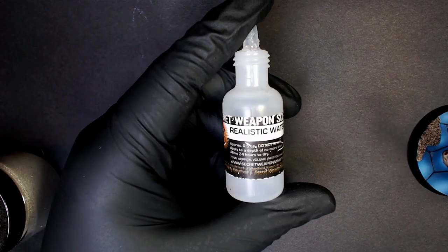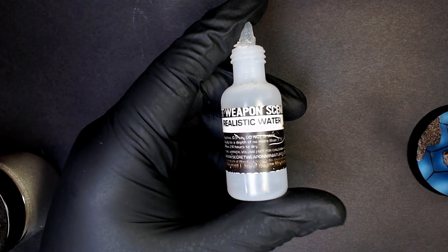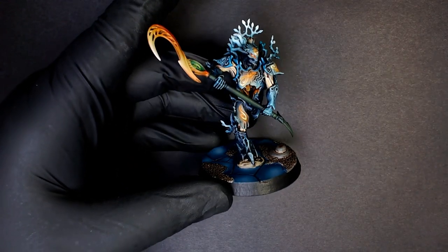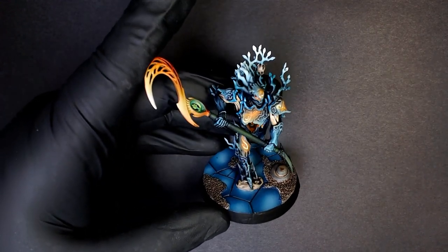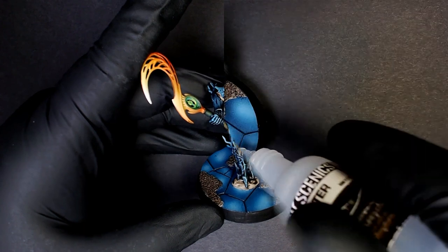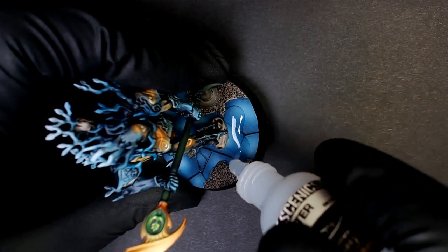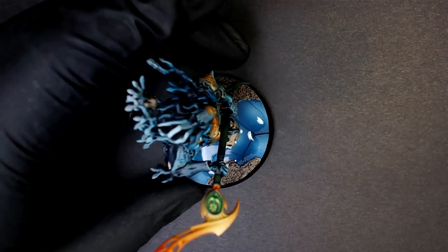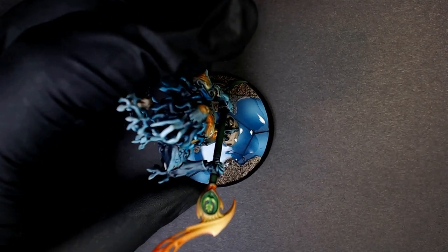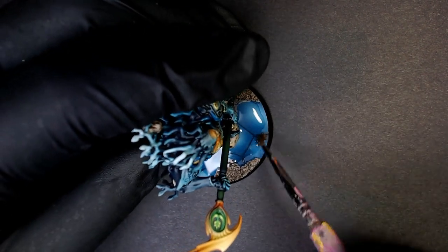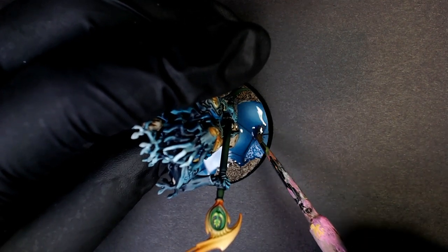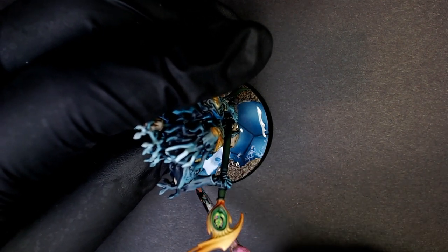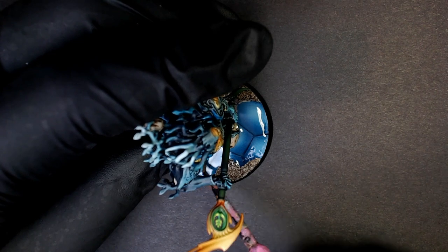Let's do this thing. I'm going to grab some of that Secret Weapon Scenics realistic water - it's one of my favorite products in the game. It works real easy, it's literally just a resin. It dries clear, it applies clear. I have never used a water effect this easy to use that dries this clear. You'll see I'm pouring it right onto the base.